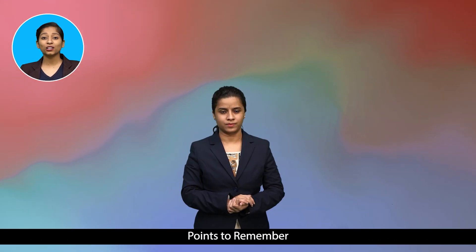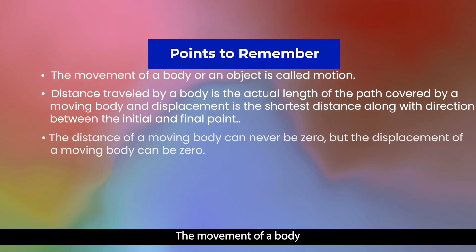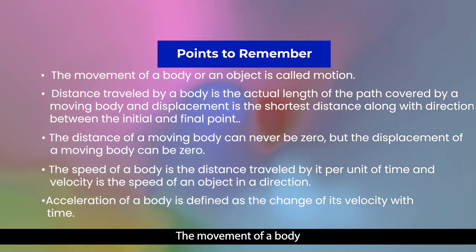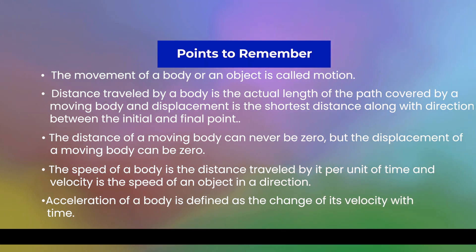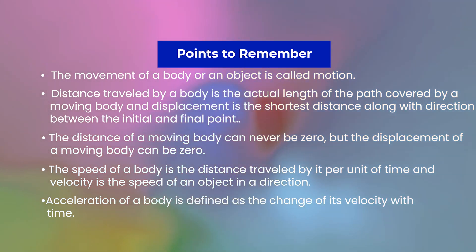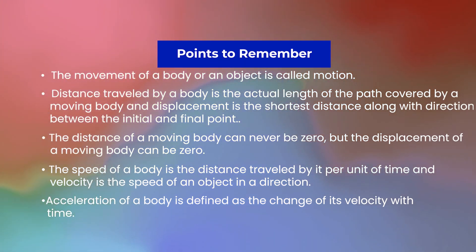Points to remember: the movement of a body or an object is called motion. Distance traveled by a body is the actual length of the path covered by a moving body. Displacement is the shortest distance along with direction between the initial and final point.